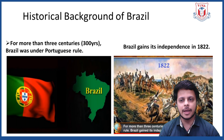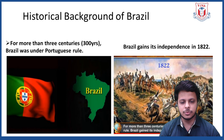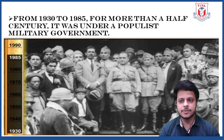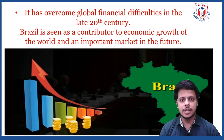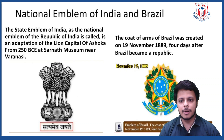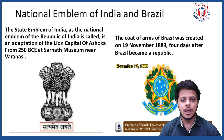Let's understand the historical background of Brazil. For more than three centuries — that means 300 years — Brazil was under Portuguese rule. Brazil gained its independence in the year 1822. From 1930 to 1985, for more than half a century, it was under a populist military government. It has overcome global financial difficulties in the late 20th century and is seen as a contributor to economic growth and an important market in the future. The national emblem of India is an adaptation of the lion capital of Ashoka from 250 BCE at Sarnath Museum near Varanasi. The coat of arms of Brazil was created on 19th November 1889, four days after Brazil became a republic.